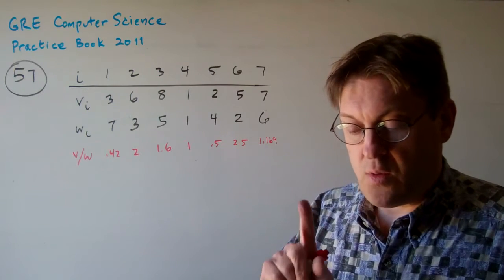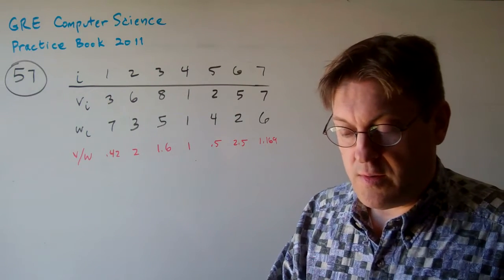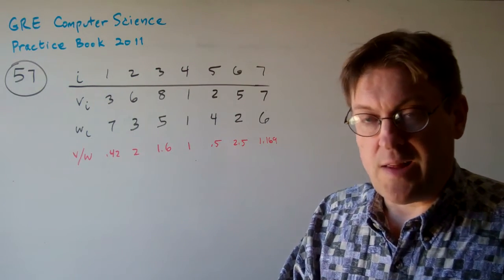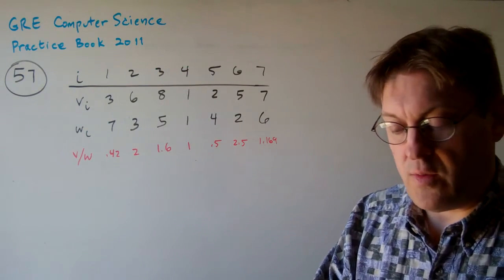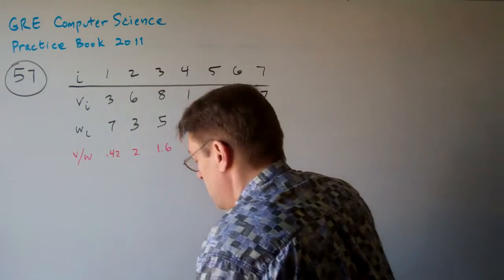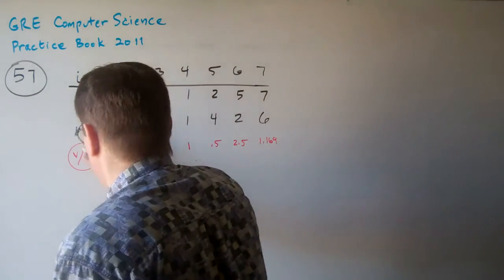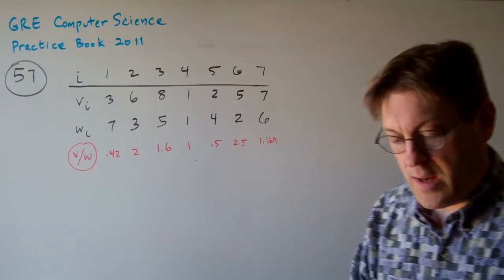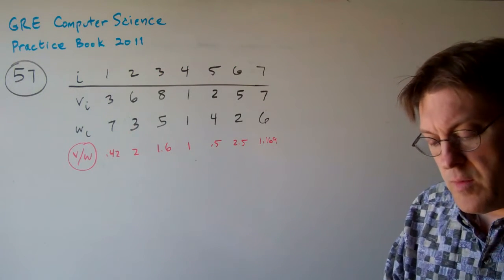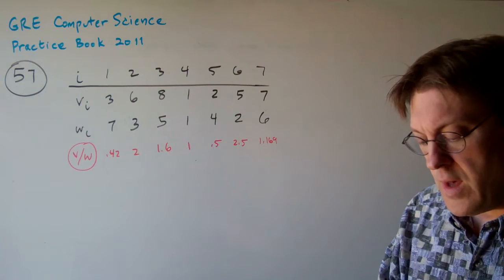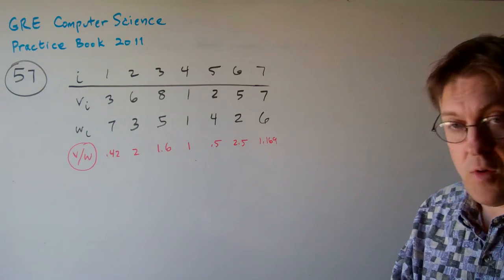A hiker fills the knapsack one at a time using a heuristic algorithm that's greedy on value density. The value density of an item is the value weight ratio. I put the value weight ratios for each item here in red. When this heuristic algorithm is used, what's the total value of the items that are packed and is the total optimal?